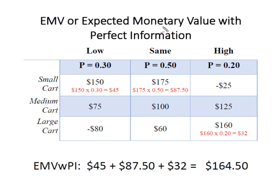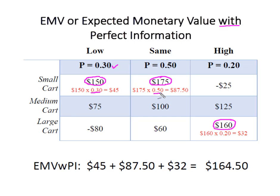Now I'm going to look at my expected monetary value with perfect information. Remember that perfect information is going to tell me which state of nature is going to occur in the future. So I go into each state of nature and select the highest payoff under each state of nature. I then weigh that payoff by the probability of that state of nature occurring, multiplying each highest payoff by its probability. That gives me my expected monetary value with perfect information — the sum of these weighted payoffs.